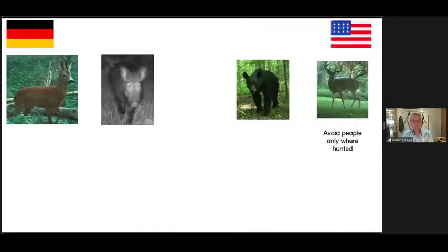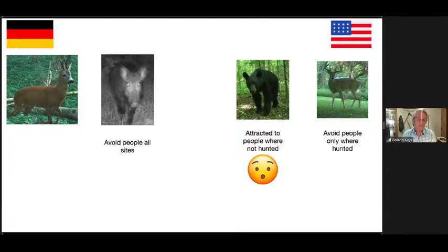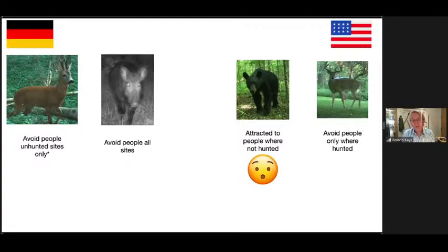Deer seem to notice where they're hunted and where they're not, responding accordingly by being more or less afraid of people. White-tailed deer avoid people only where hunted; where they're not hunted, they don't. Black bears avoided people where hunted but were actually attracted to areas where people had recently been in unhunted areas — a somewhat surprising, unexplained result. Wild hogs in Germany avoid people at all sites. Roe deer showed the opposite pattern — avoiding people only at unhunted sites, which is a quirky result we can't fully explain.